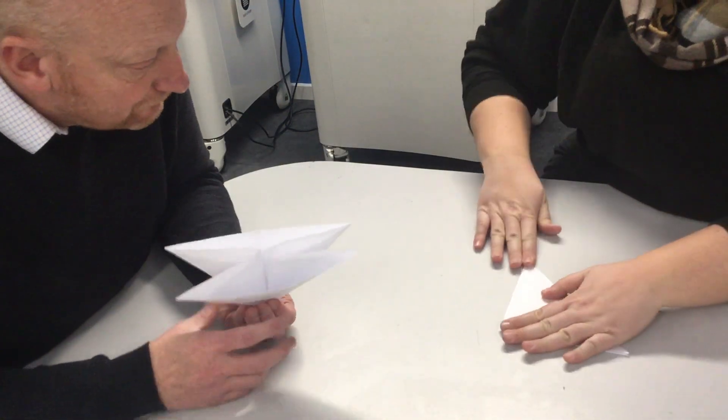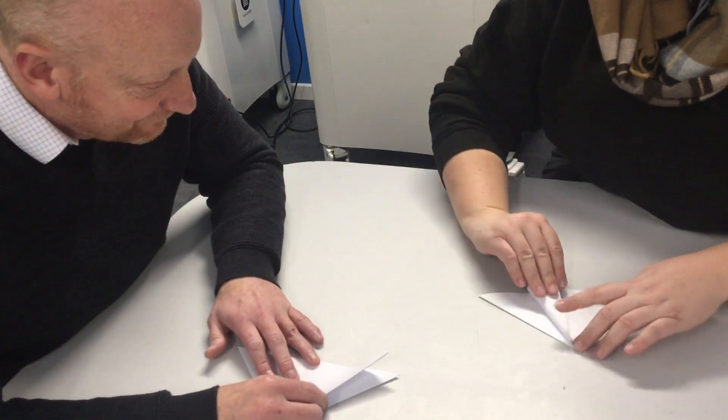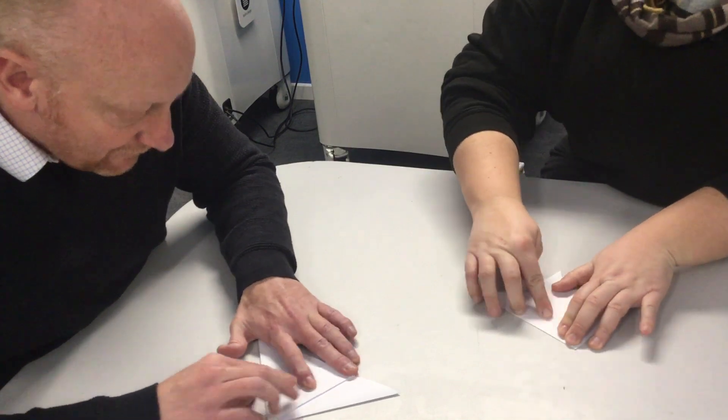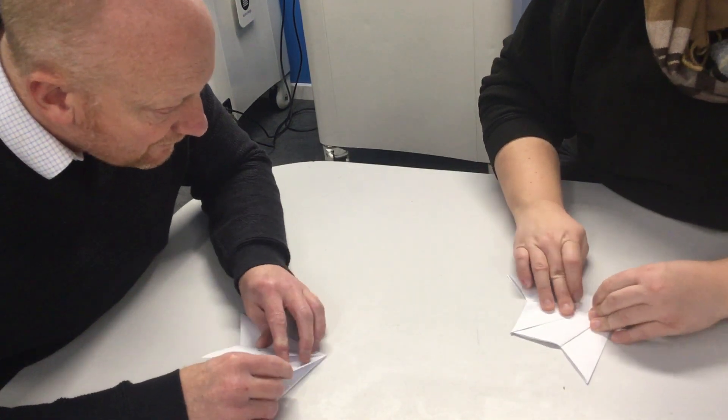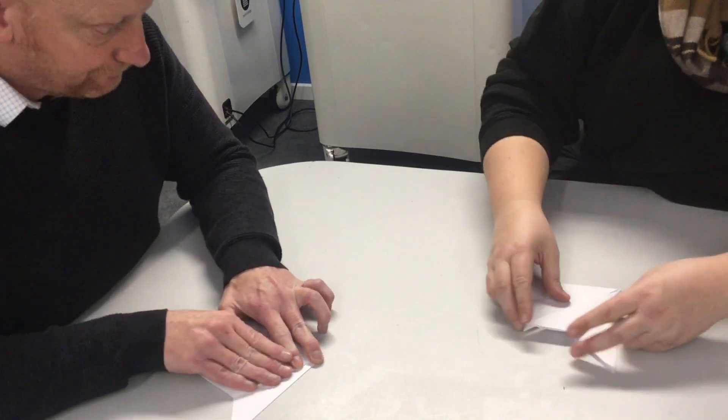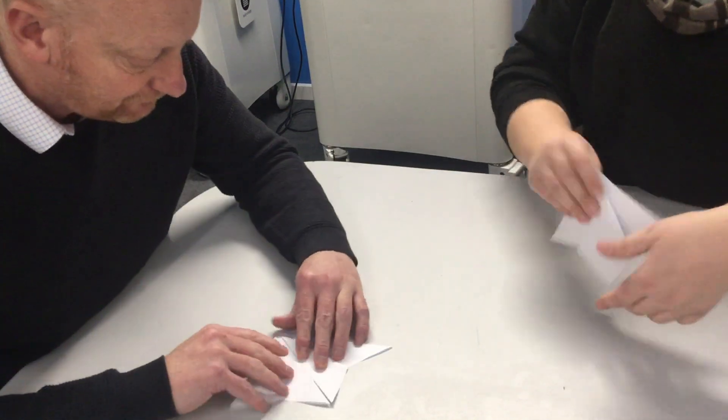And then what we're going to do is fold from these flaps into the centre. Just the top layer of them. So they fold in towards the centre. So join that centre line that's already a fold here. And then we flip it over and do the same on the other side.